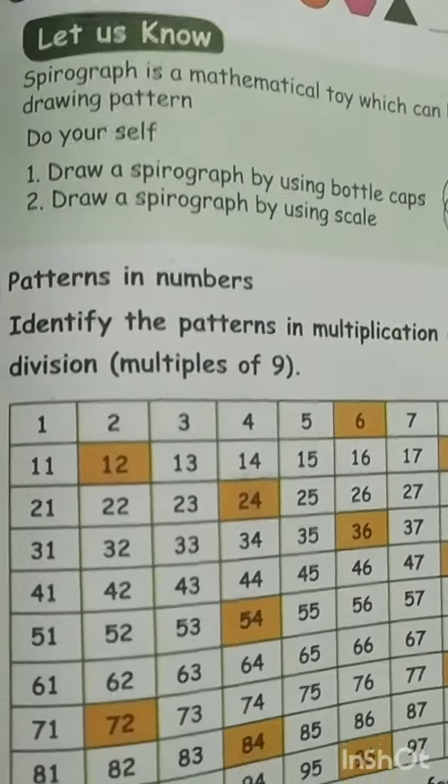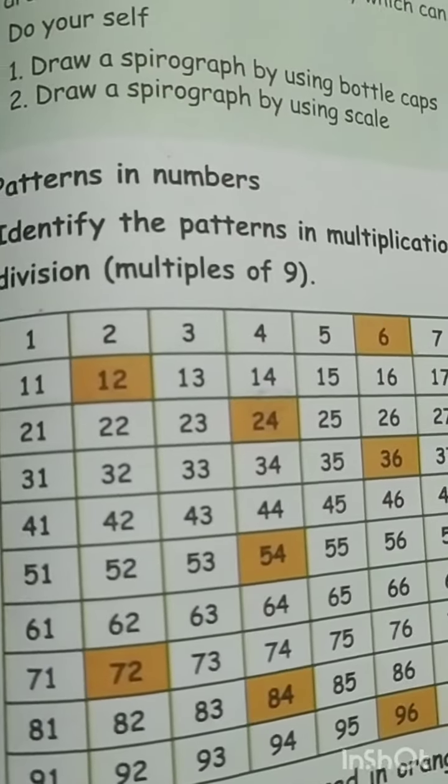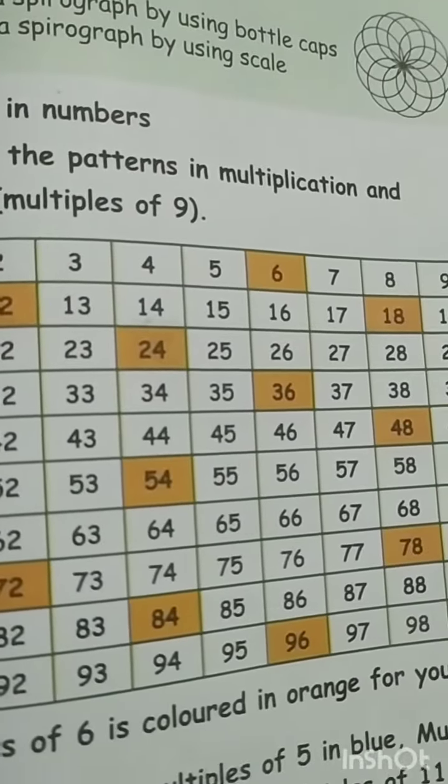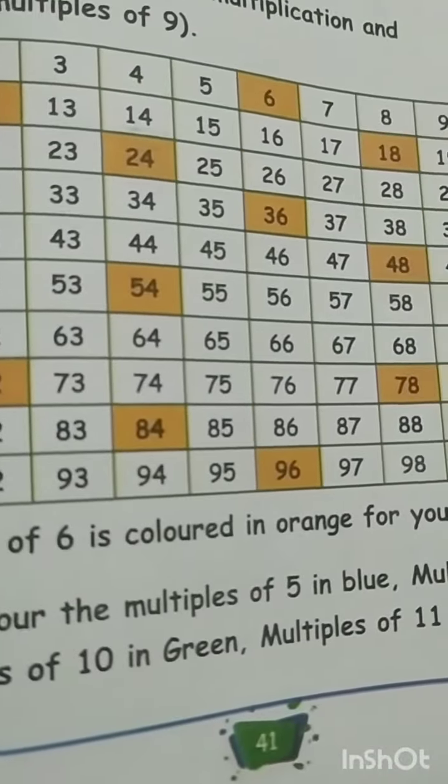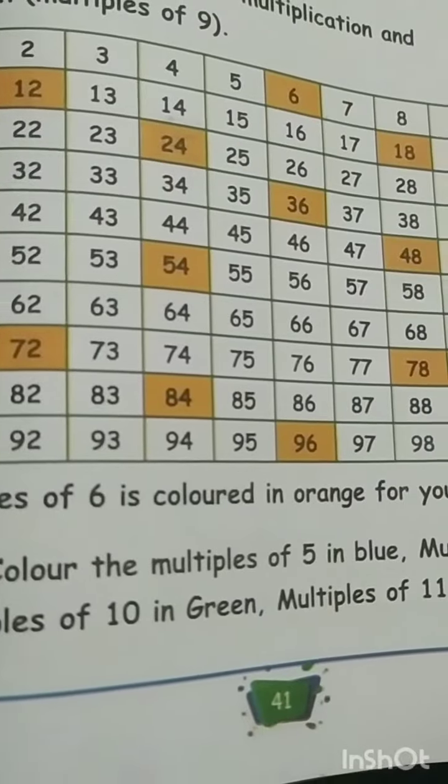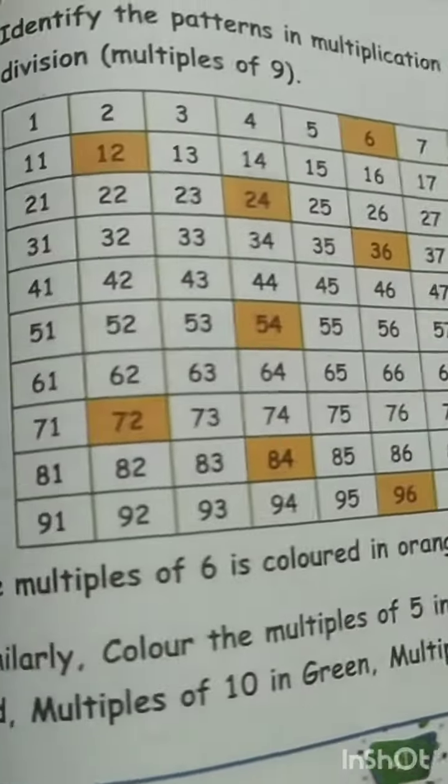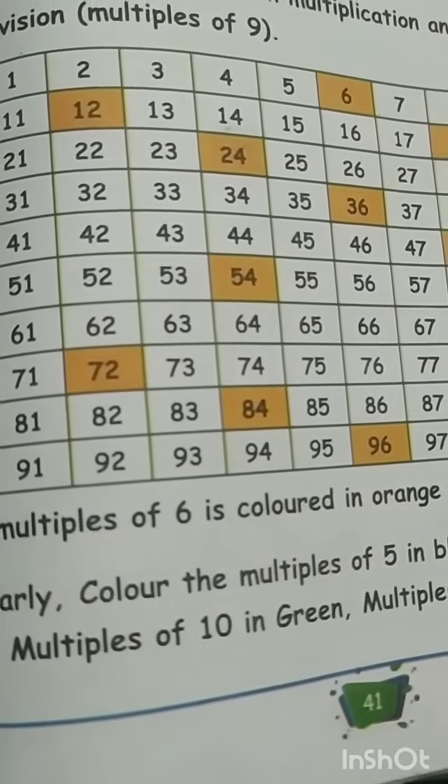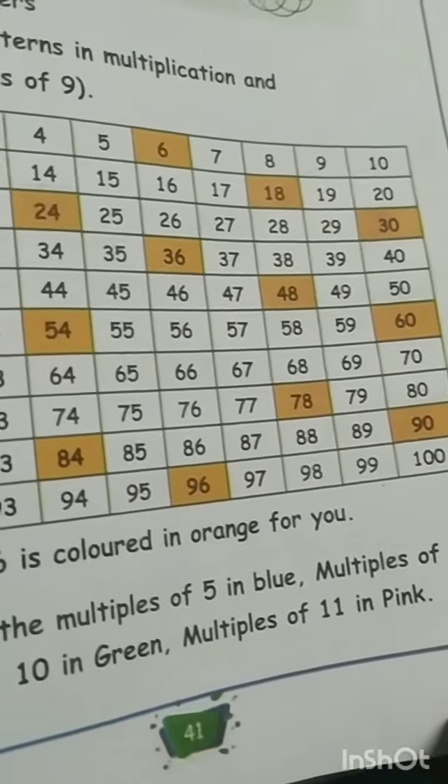And here I have the identify the patterns of multiplication tables. Now we have given the multiples table of nine. So next you can go for the multiples of six colored in orange. Write the table and color the multiples of six with orange, then five in blue, then nine in red, then multiples of ten in green, eleven in pink. So you have to do this in the classwork or your Max book.